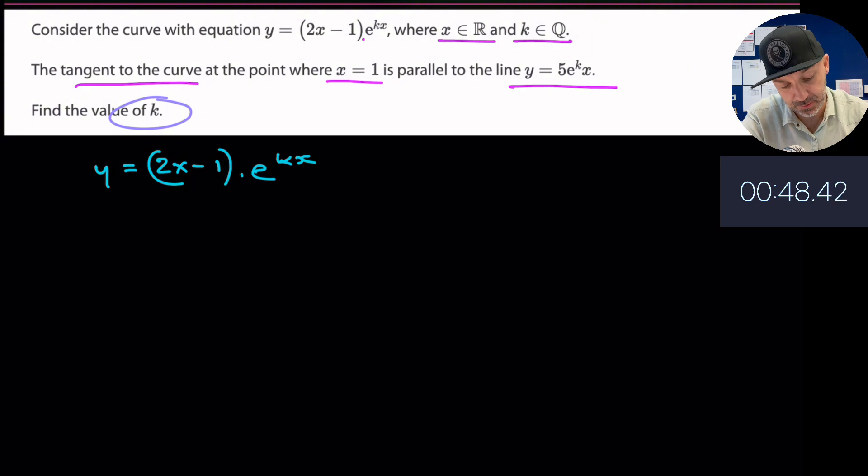So y equals (2x - 1) times e to the kx, and we are going to define u as 2x - 1 and v is e to the kx. Going over to the right hand side here, u equals 2x - 1, therefore u prime, the derivative of u with respect to x, is simply 2.